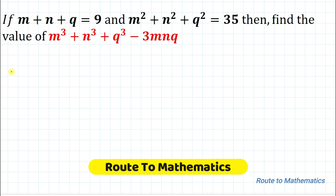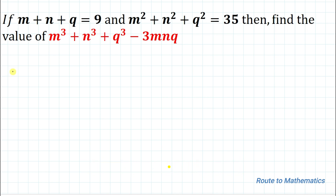Hello everyone, welcome to Root 2 Mathematics. In this video, we are going to solve an interesting algebraic question. The given question is: if M plus N plus Q equals 9, and M squared plus N squared plus Q squared equals 35, then find the value of M cubed plus N cubed plus Q cubed minus 3MNQ.